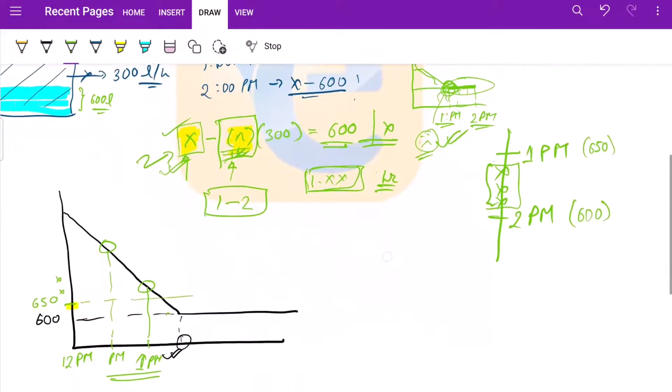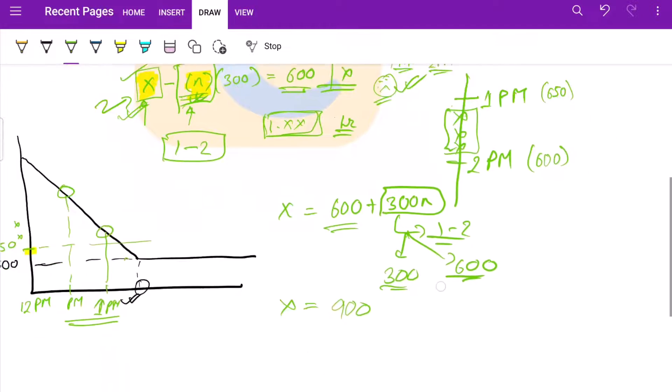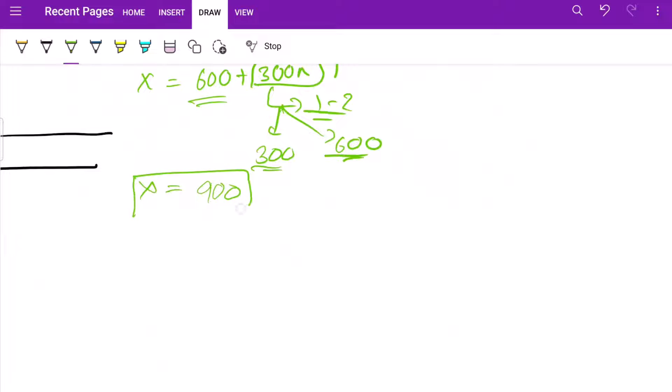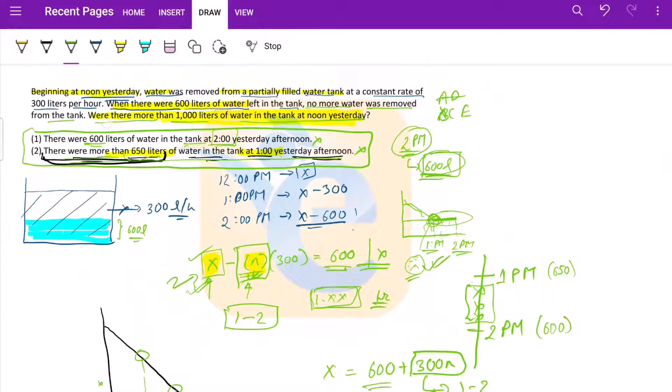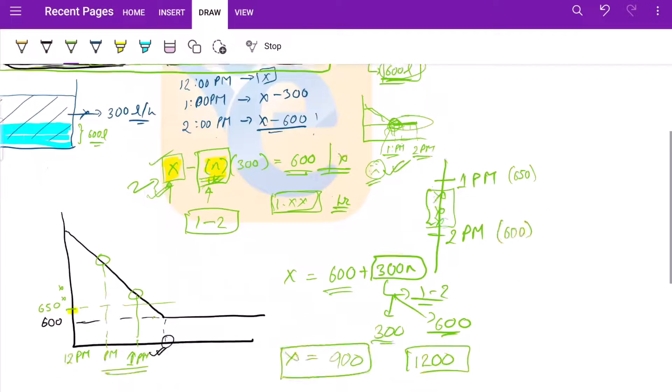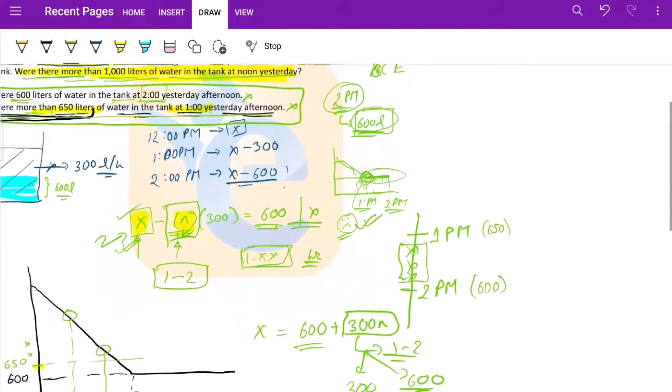Our x would be 600 plus 300n. Now this can be in the range of 1 to 2. The minimum value can be 300, the maximum value can be 600. So x can range from 600 plus 300, which is 900, to 1200. What we needed to find out was, were there more than 1000 liters of water? It can be both. It can be less than 1000, it can be greater than 1000. And again, both statements combined doesn't really help us.